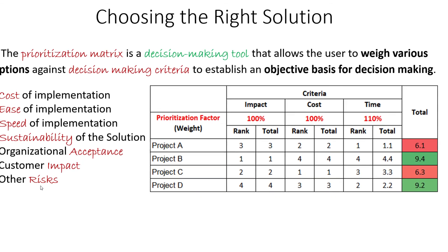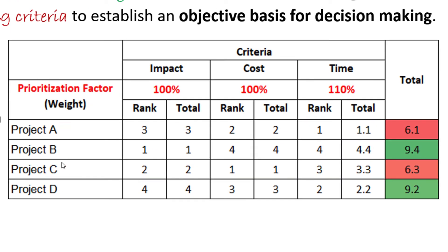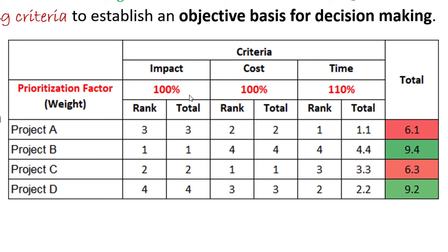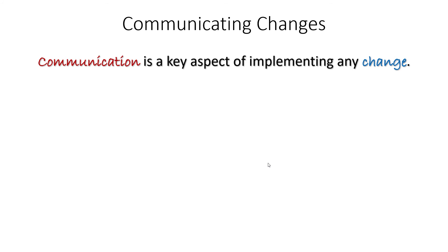Here's an example of a prioritization matrix. Essentially, you list out the different corrective actions or potential solutions to your problem, then define your criteria — effectiveness of the change, cost, and timeline. Use those criteria to rank the different solutions against each other to objectively determine what solution is right for your situation. That's how you make the right decision and choose the right solution to implement for your particular problem.